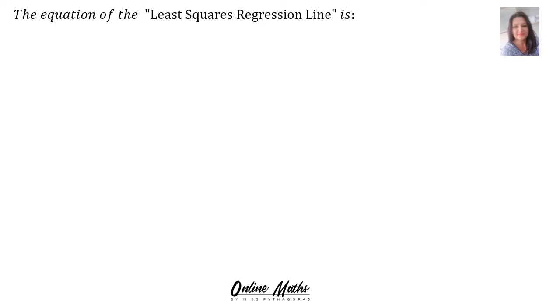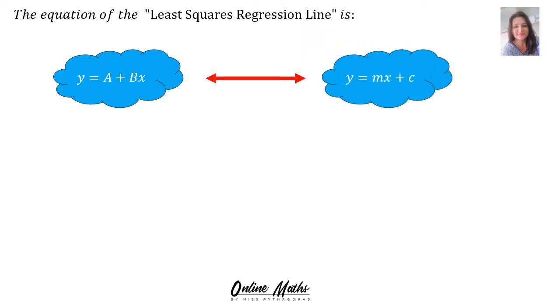The equation of the least squares regression line is y equals a plus bx. You'll see it's very similar to a normal straight line y equals mx plus c. m is the gradient and c is the y-intercept. So when you go to the least squares regression line, then a is the y-intercept and b represents the gradient.